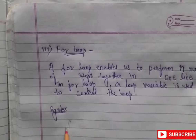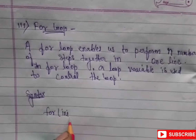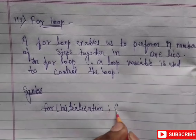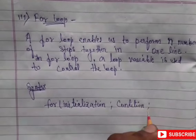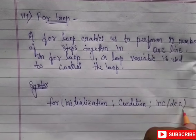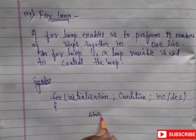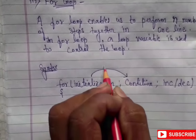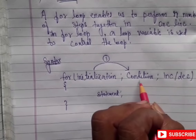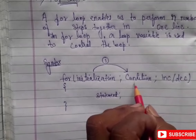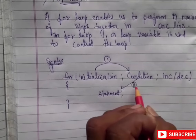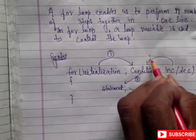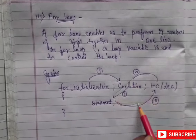Here we write the syntax of for loop: 'for(initialization; condition; increment/decrement)' and inside the loop body we write the statement. First we perform initialization, then check the condition; if true, the statement executes, then the increment or decrement operator is performed, and then the condition is checked again — statement, increment/decrement, repeating the cycle.